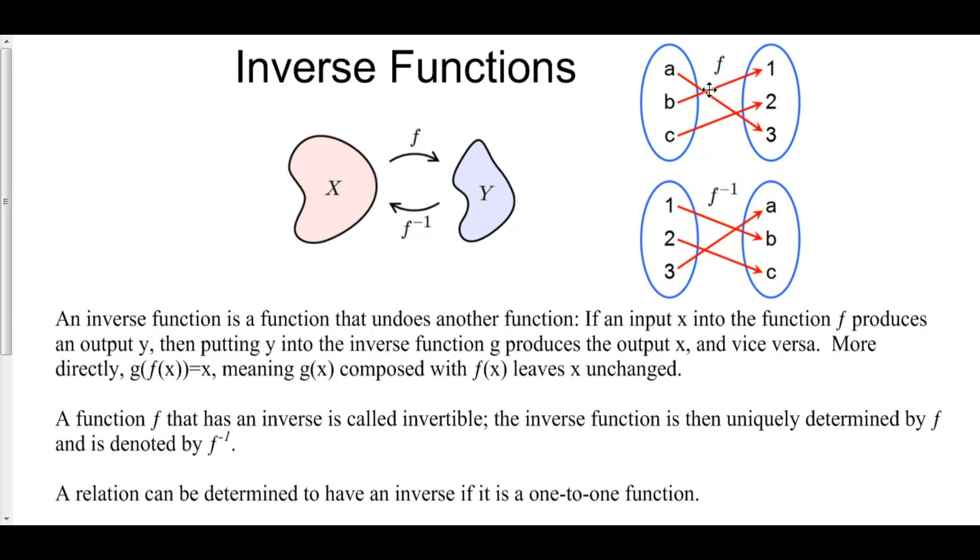More directly, if we were to take the composition of f and f inverse, we would plug A into f. So let's actually think about this for a second. If we took f of f inverse of, let's say, one. Well, f inverse of one goes to B. So here we have f of B. And then f of B goes back to one.